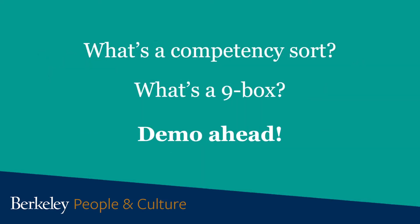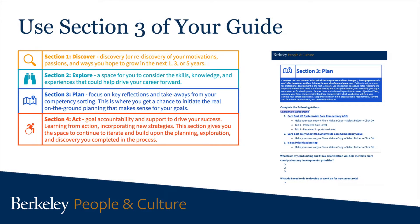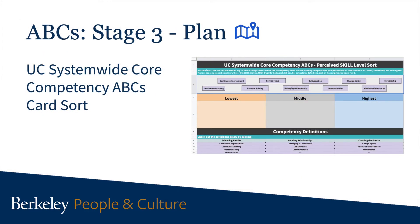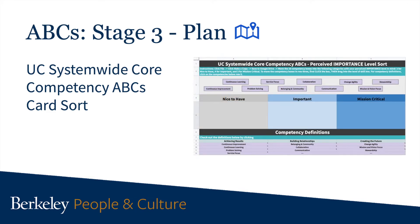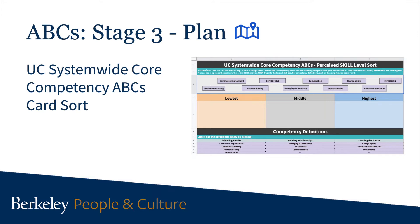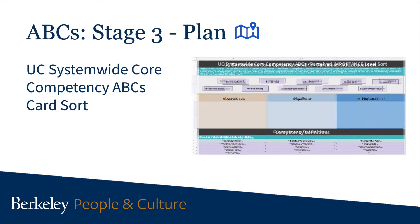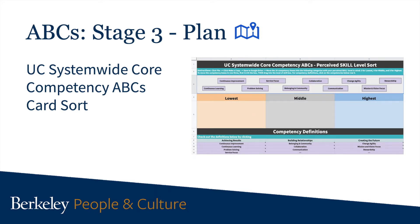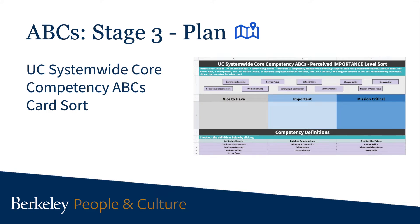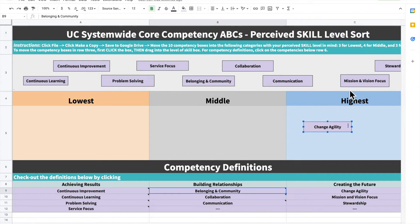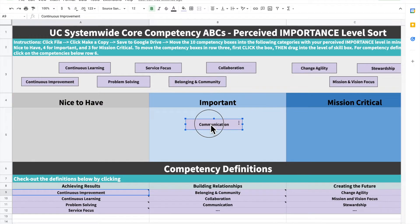So what is a competency sort and how will this all work? In a few moments you will get a virtual demo of the sorting process, but first a few details about the activity. In this competency sort, you will be shown the 10 UC system-wide core competency ABCs and their definitions on two Google Sheet tabs. The first tab is your competency sort for your perceived skill level. The second tab is your competency sort for your perceived level of importance for that skill, really thinking one to three years down the road. You will sort competencies into three categories on both of those sheets.